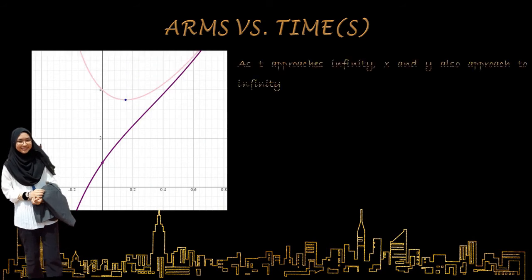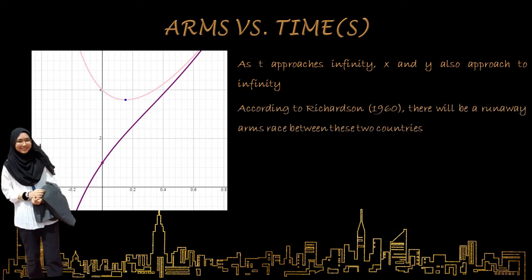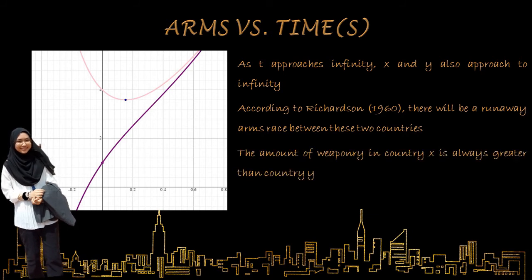Based on the graph, we can see that as T approaches infinity, X and Y also approach infinity. According to Richardson 1960, there will be a runaway arms race between these two countries. It can also be seen that the amount of weaponry in country X is always greater than that of country Y.